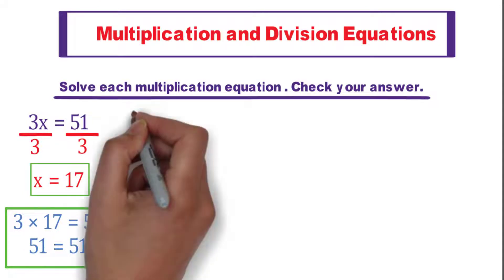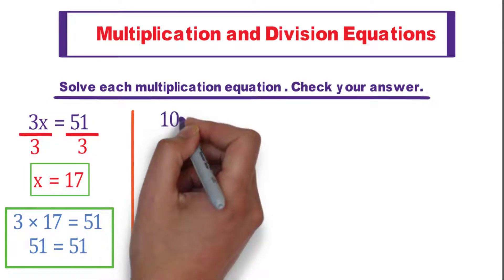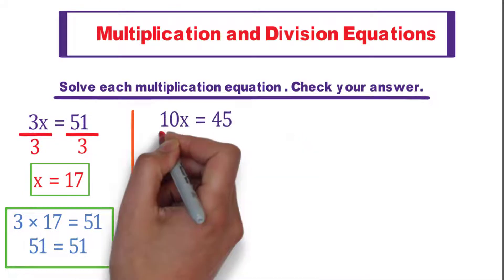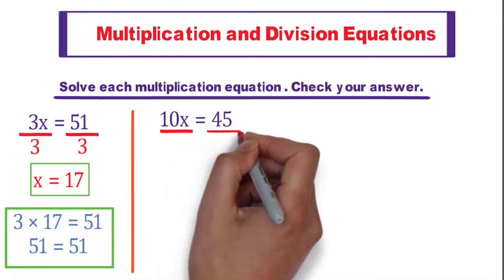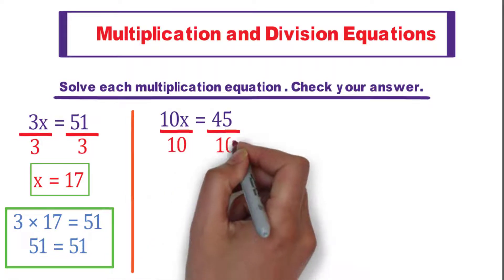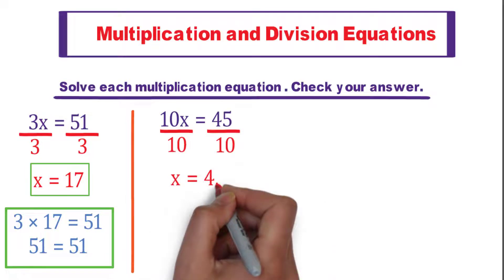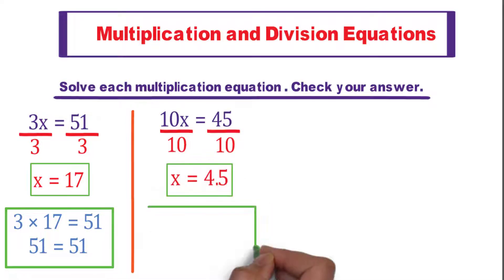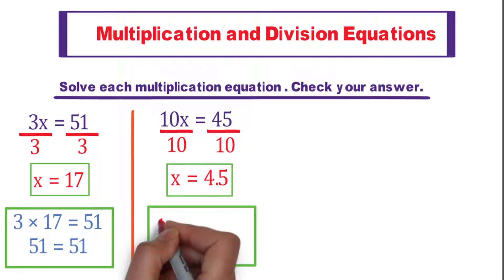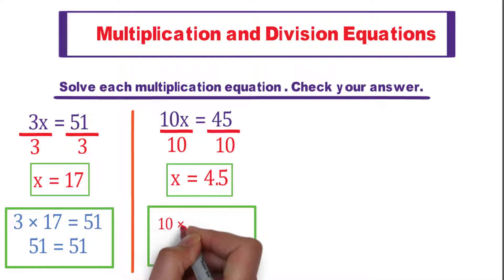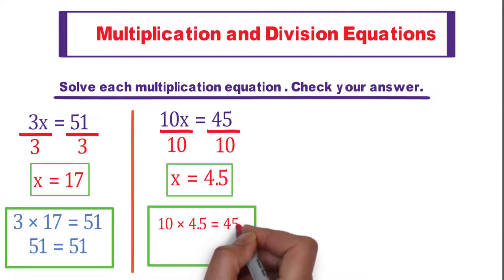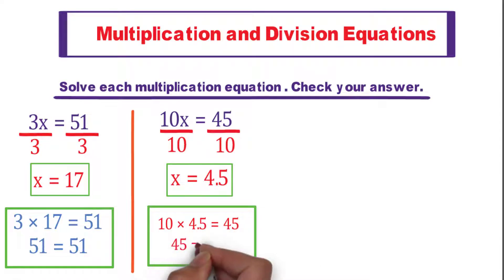Next: 10x equals 45. By the same way, divide both sides by 10. We get x equals 4.5. To check your answer, substitute in the given equation for x equals 4.5. Now 10 times 4.5 equals 45. We get 45 equals 45.